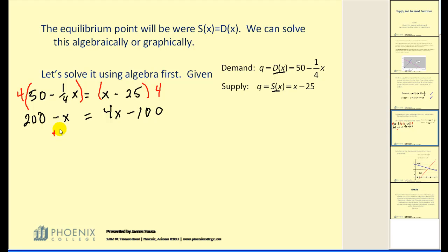Solving for X, let's add X to both sides. That would give us 200 is equal to 5X minus 100. Add 100 to both sides. 5X equals 300. Divide by 5. X is equal to 60.